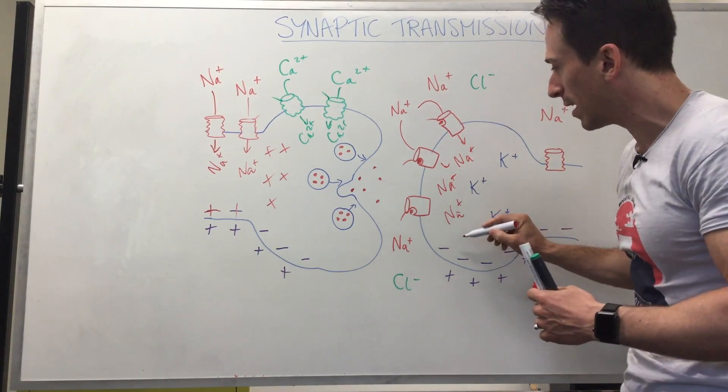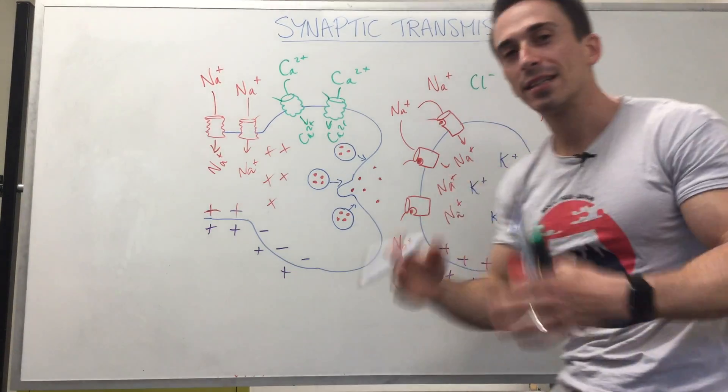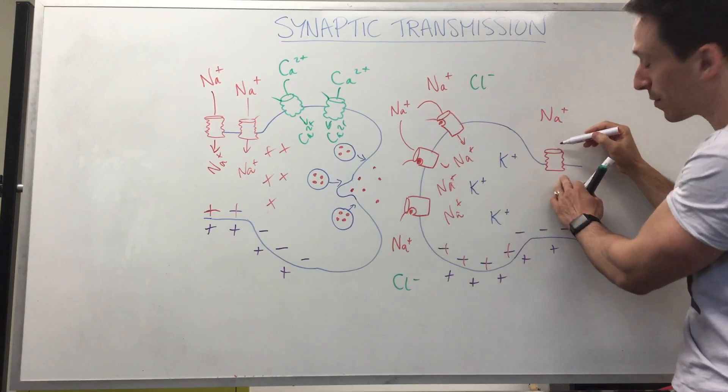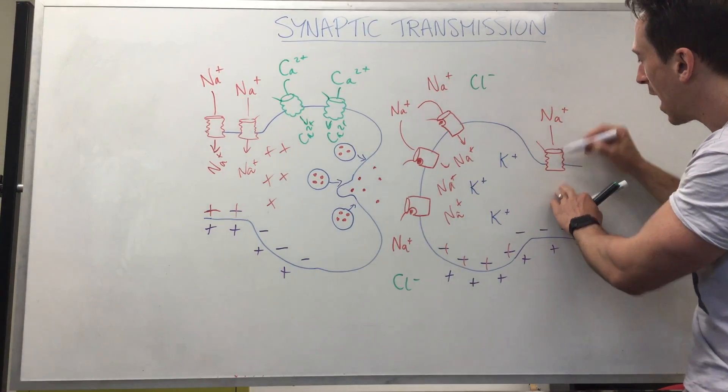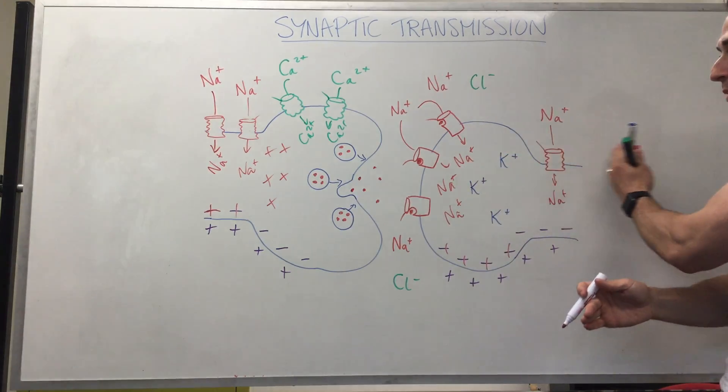Again, remember, it's negative 70, but all this positive sodium coming in, it makes it positive. If it hits negative 55, it then opens up the voltage-gated sodium channel and sodium comes in. And then the whole action potential begins again.